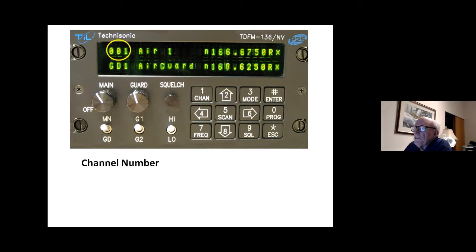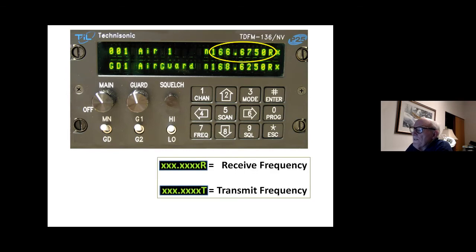Let's walk left to right across the display. The first three digits are your channel number. You'll see channel 001 on top and guard one on the bottom. So that's the channel number that you're on. Then there's the channel description, which will be a plain language description. It'll say air one or air two or CC1 or CC2 or TAC1 or R47 or R58. That'll be the channel description.